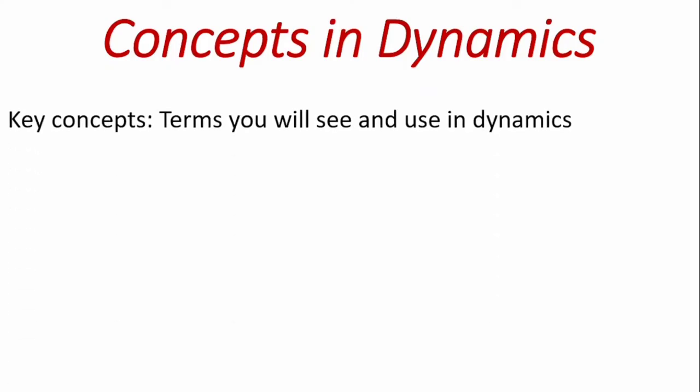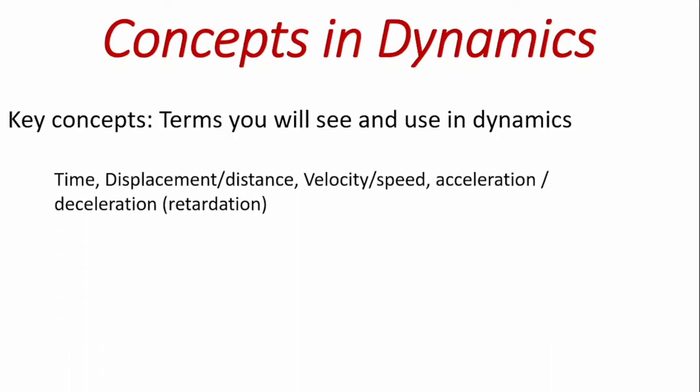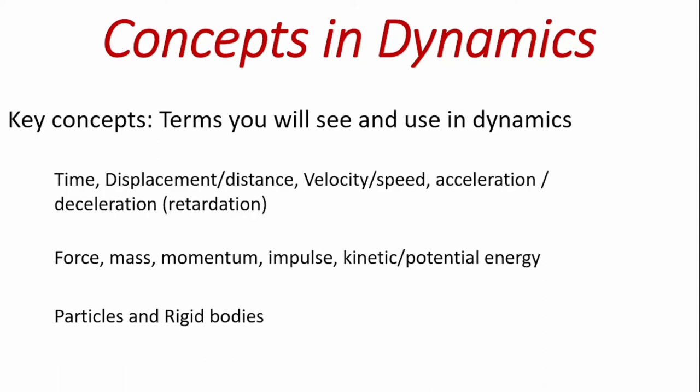Then what are the concepts of dynamics? That's the terms we use and see as far as dynamics is concerned. The first are the variables that describe the geometry of motion: that's time, displacement, velocity, acceleration. Then as well as certain items that relate or that find much application in kinetics, which are the force, masses, momentum, impulse, kinetic and potential energy. Then there is the concept of particles and rigid body as it affects the study of dynamics.